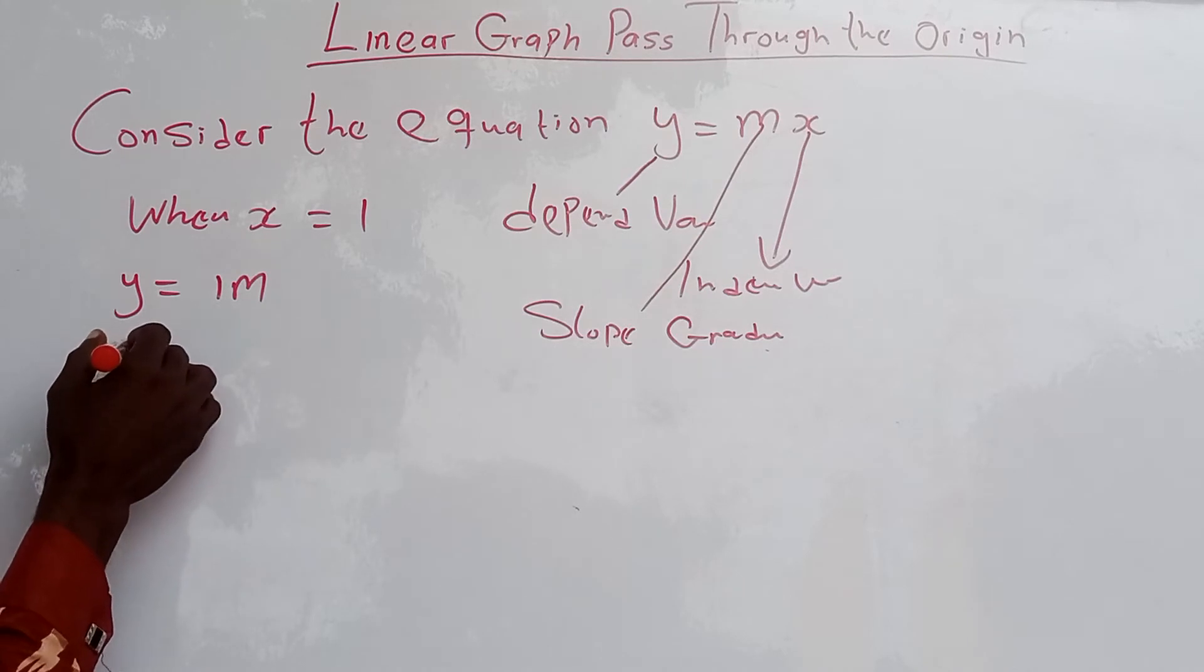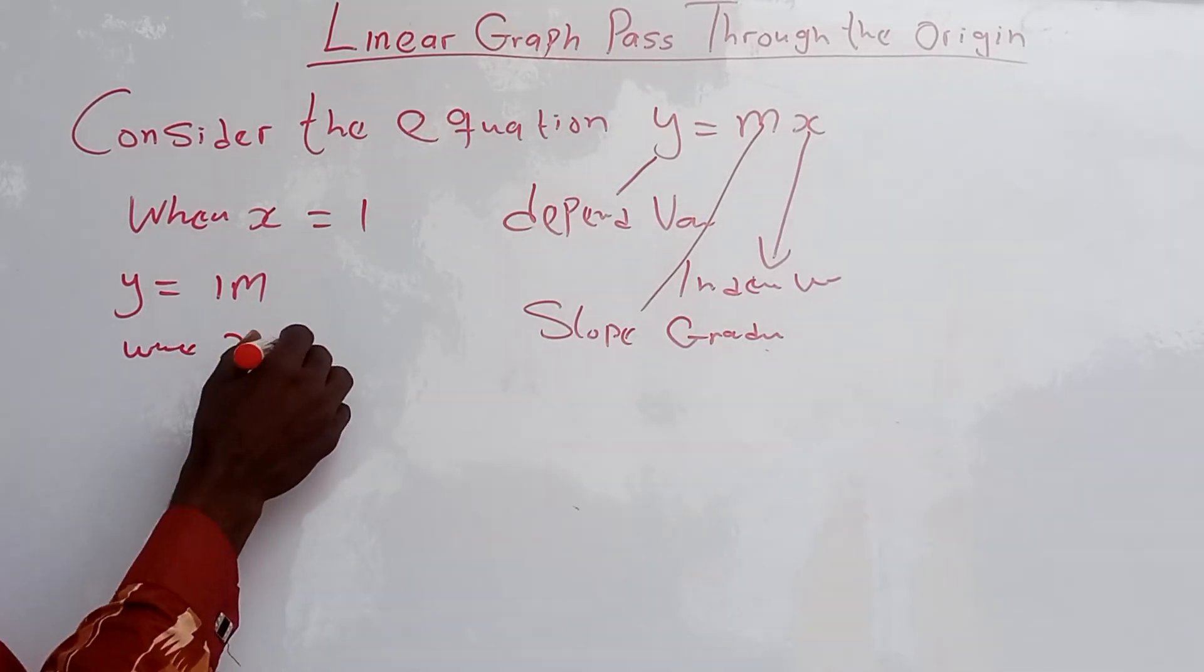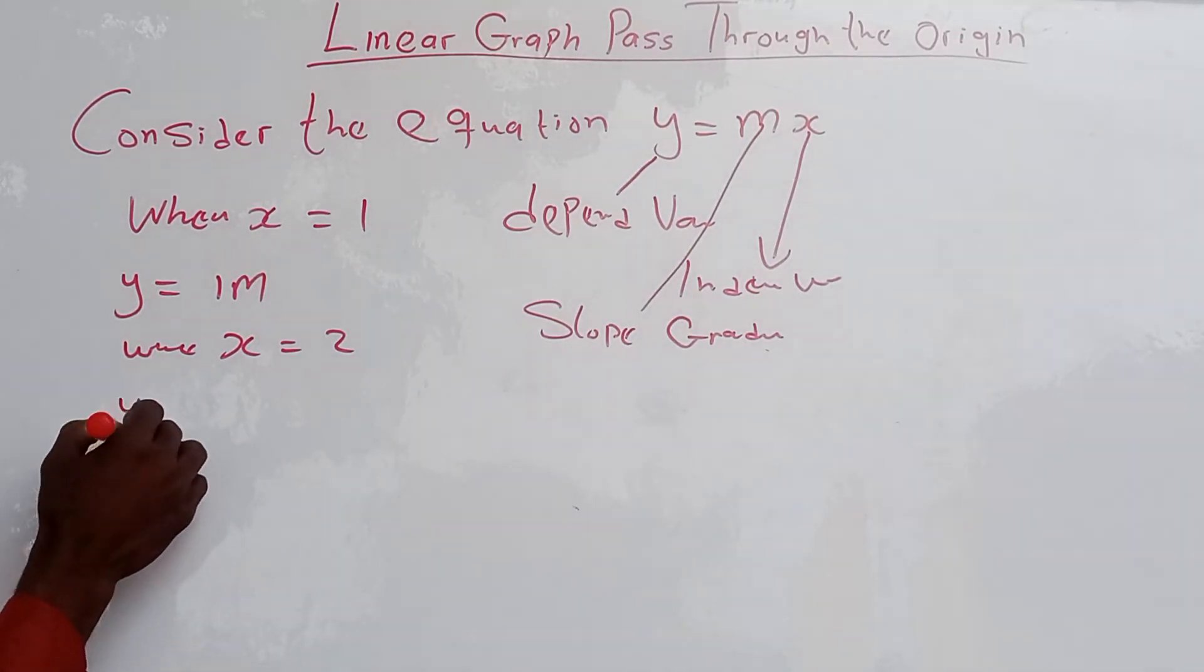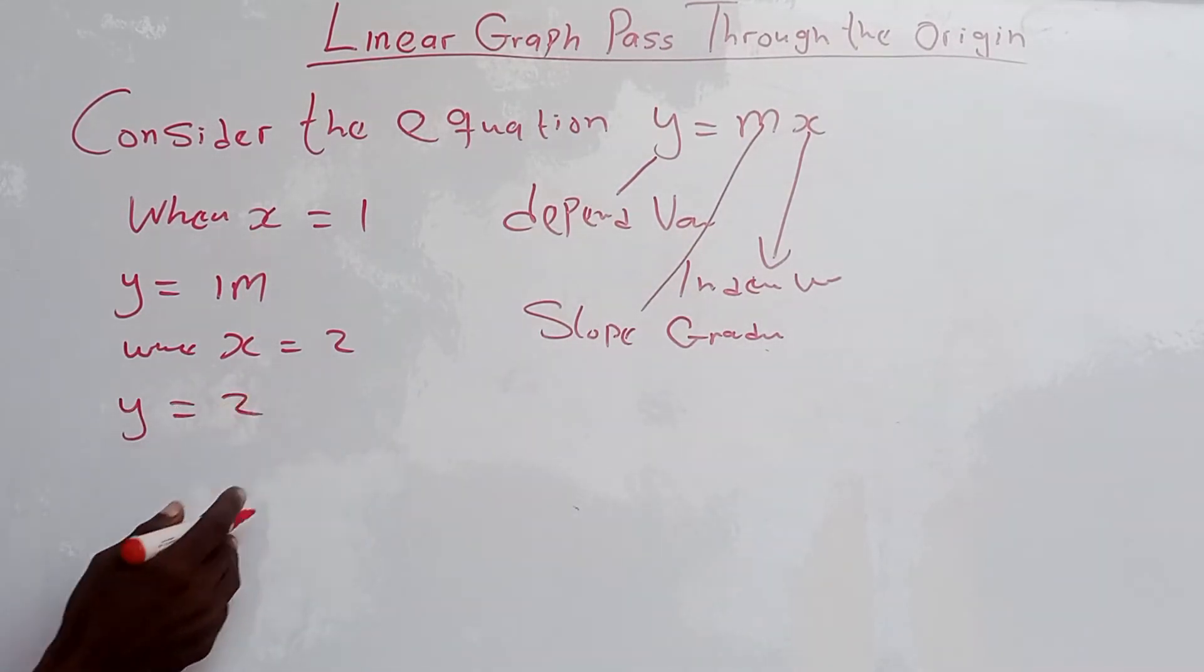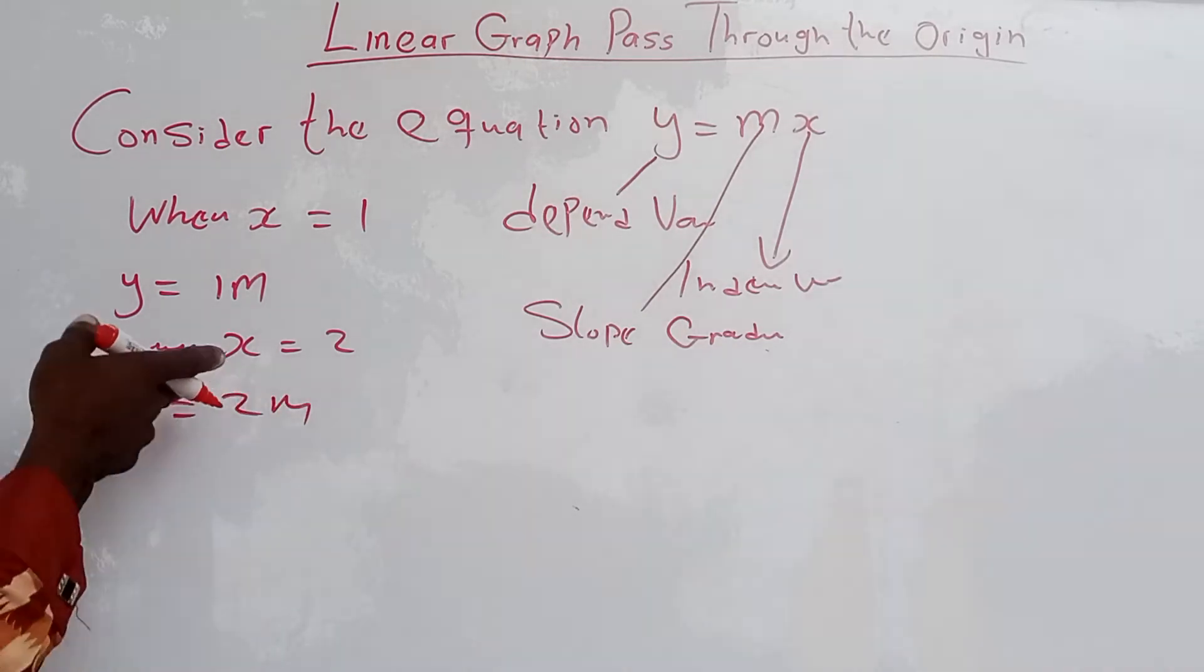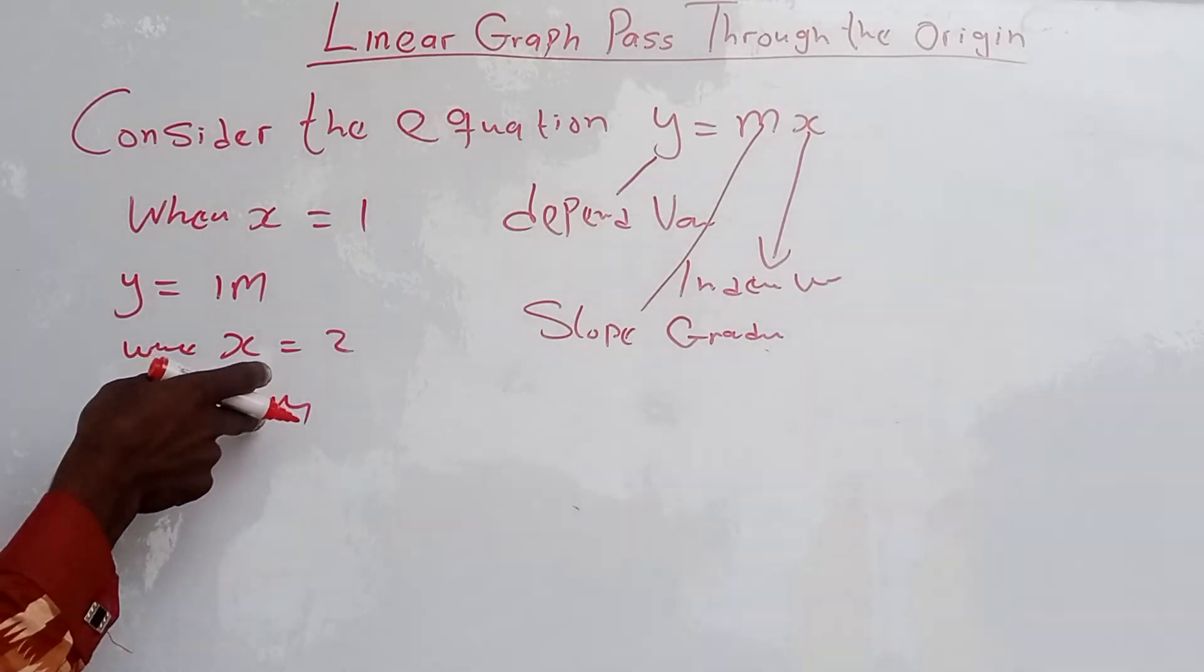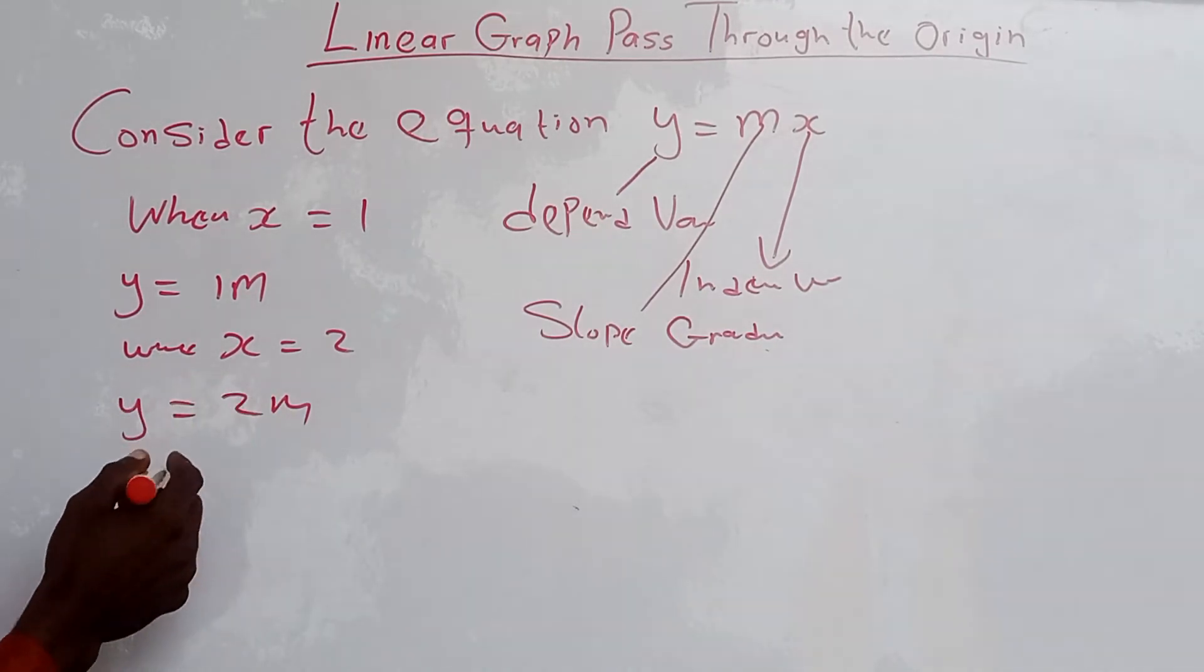For the second example, when x equals 2, what is our value for y? Y equals 2m. So when x equals 2, y equals 2.